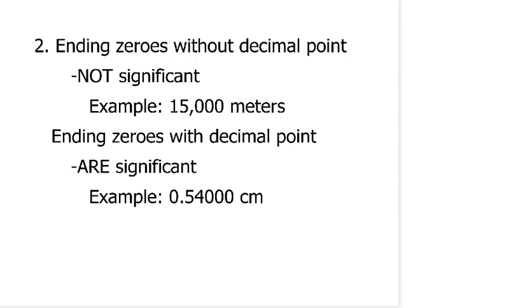Now, if you have ending zeros, such as here, and there is a decimal point, these zeros are significant. So, how many significant figures are there here? There are two. One, two. Zeros don't count. How many significant figures are in this other example? There would be five significant figures there. Five significant figures because there are five digits there. The zeros count because of the decimal point.